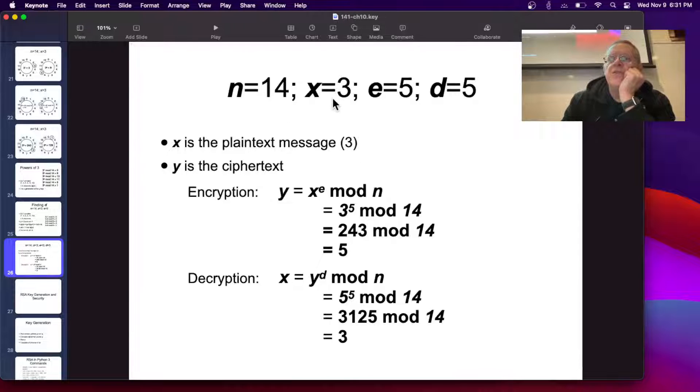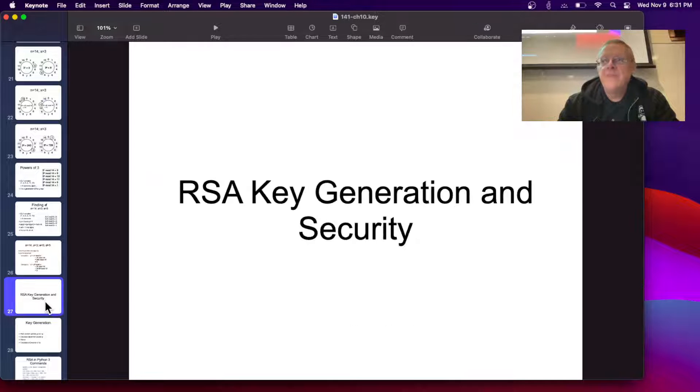So, to encrypt a message of 3, you raise it to the 5th power, mod n, and that gives you 5, and then to decrypt it, you raise it to the 5th power again, mod n, and that gives you the original message of 3. So, that's how it works. All right, so now you just have to do it with longer keys in practice.